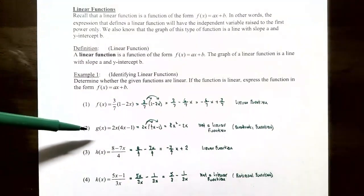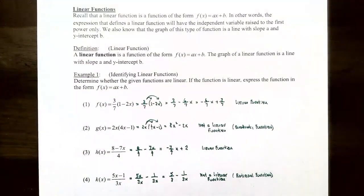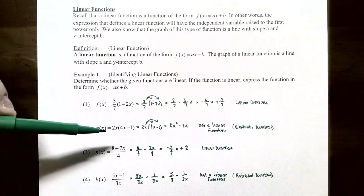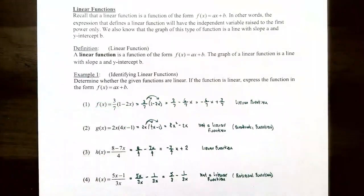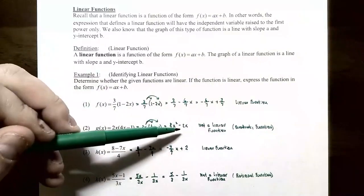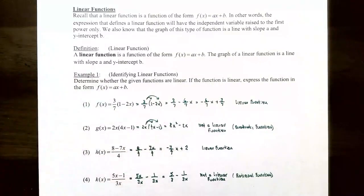Number two: g(x) = 2x(4x - 1). Distributing 2x gives 8x² - 2x. Notice that the highest power on the variable is two, so this is not a linear function — it's a quadratic function. This function will not have a constant rate of change.